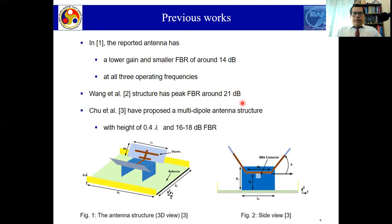In some previous works related to this work: Reference 1 reported an antenna with very low gain and a smaller front-to-back ratio of around 14 dB, operating at three frequencies. In Reference 2, Wang and others proposed a structure with a front-to-back ratio of around 21 dB. In Reference 3, a multi-dipole antenna structure with a height of 0.4 lambda is proposed, with a front-to-back ratio of 16 to 18 dB. They have also employed some reflectors, but the front-to-back ratio is not very good at 16 to 18 dB.